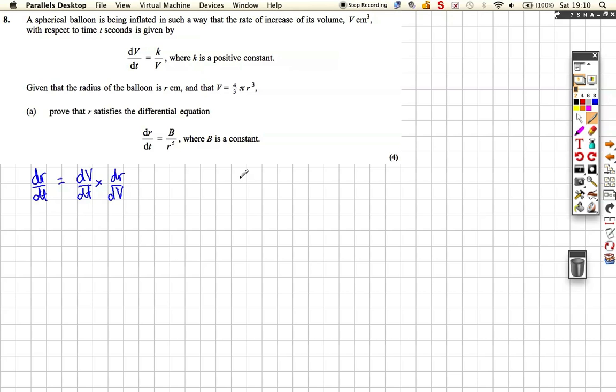I suppose actually we could rearrange to get an equation in r, which will be a little bit complicated, but you could do it, and then you could differentiate with respect to v. It's actually easier if you say that dv/dt, we know from the question, is equal to k over v. And then if we find dv/dr, so we differentiate this with respect to r, we're going to get 4 pi r squared.